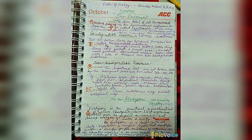Biological magnification means a toxic substance enters a water or pond ecosystem and accumulates through the food chain, ultimately causing the death of tertiary consumers at the top trophic level. The next topic is ecosystem.